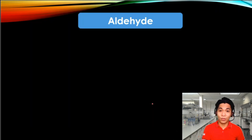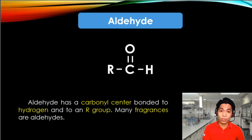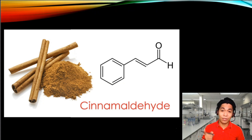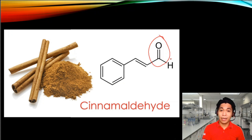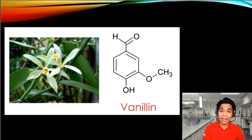The next in our list are the aldehydes. It is a C double-bonded to an O. So whenever you see a carbon double-bonded to an oxygen, it means you have an aldehyde. The most common property of organic molecules with aldehydes is that they have a distinct odor. An example is cinnamon, which has a molecule that gives its distinct odor known as cinnamaldehyde. The C double-bonded O, or the aldehyde, can be found in this location. The other one is vanilla, and its distinct odor comes from the molecule vanillin. And the aldehyde in its structure is located here.